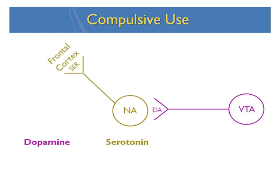We feel good when the nucleus accumbens has enough dopamine because it sends out a signal using another chemical called serotonin. That signal goes to the front part of the brain where we do our thinking, and it tells us that everything is okay. When there isn't enough dopamine tone at the nucleus accumbens, there isn't enough signal to the front part of the brain and we don't have a sense of well-being.